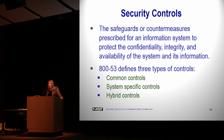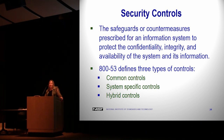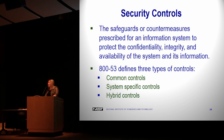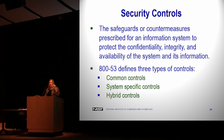In SP 800-53, there are three types of controls: common controls, system-specific controls, and hybrid controls. A hybrid control is one where some requirements are provided by a common provider and some must be implemented at the system level or scoped out. In the system security plan, you document every control in your baseline — even ones you're scoping out — along with the risk-based decision rationale. For hybrid controls, you document which part is provided by the common control provider and which part is the system's responsibility.